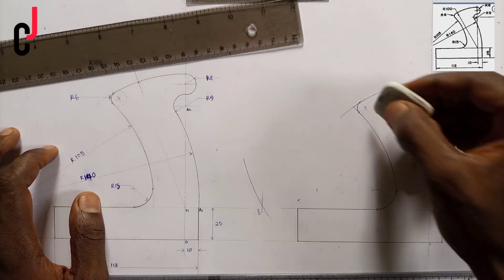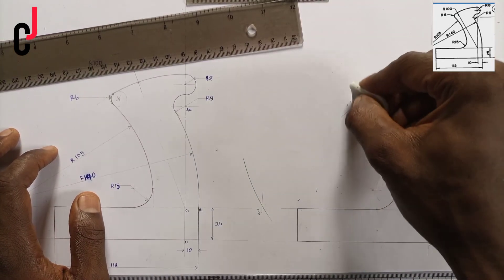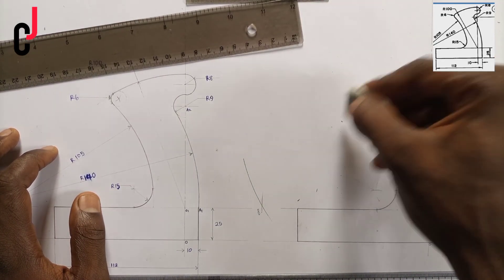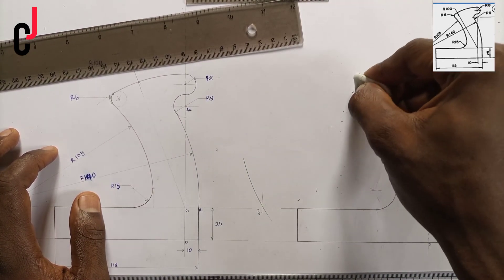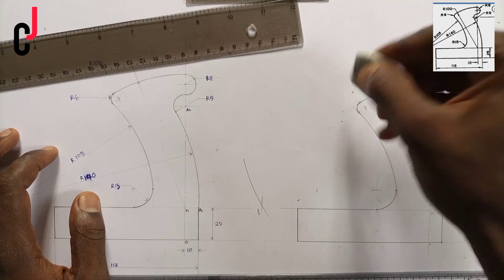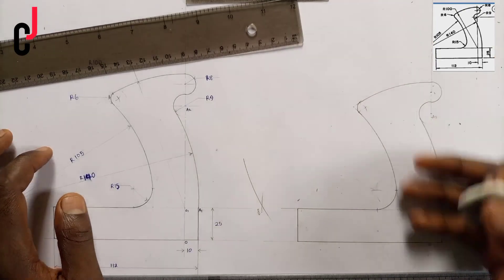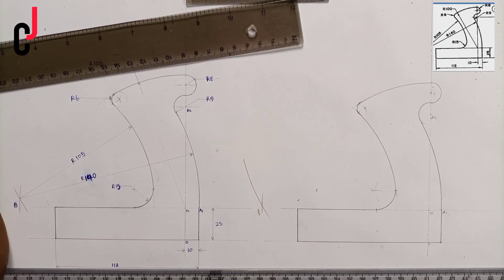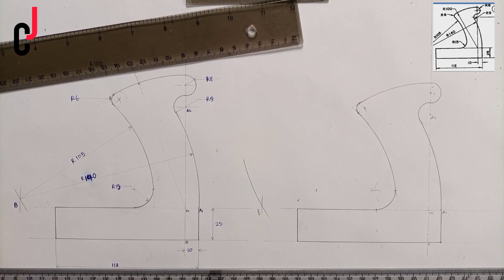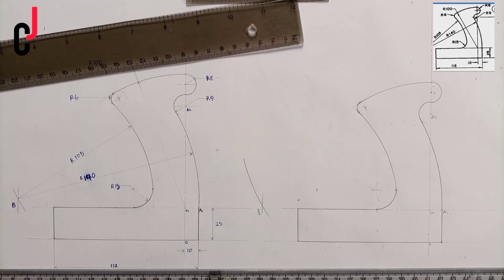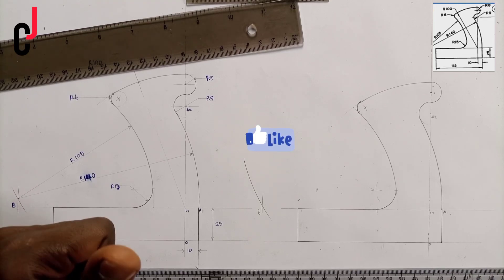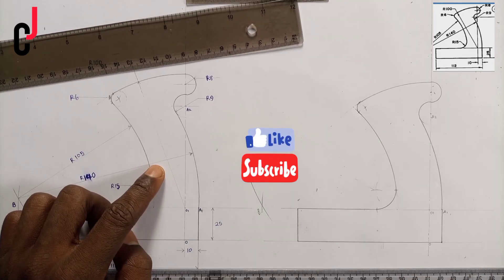We'll get that portion — erase the outer construction lines. We've succeeded in completing our jack plane handle using the principle of urgency. Thank you very much for watching. Please give me a thumbs up and subscribe to my channel.